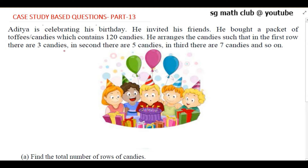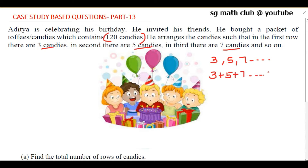In the second row there are five candies, and in the third there are seven candies, and so on. Total 120 candies are there. First row: three, second row: five, third row: seven. This forms an arithmetic progression, and the sum of the candies equals 120. We don't know how many rows there are.